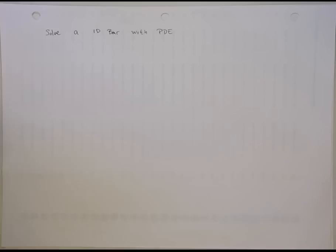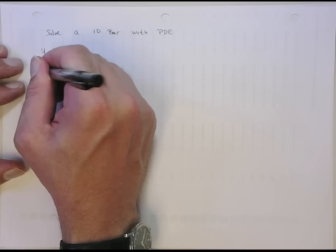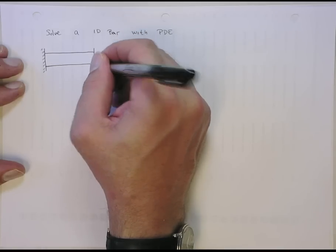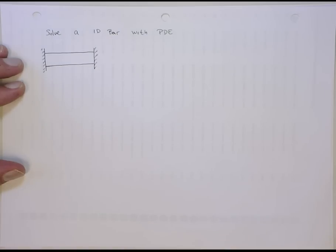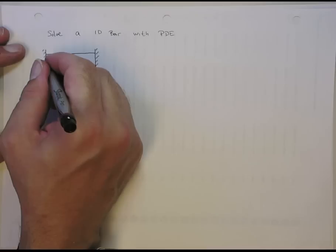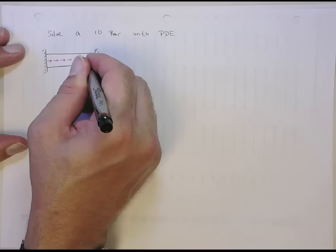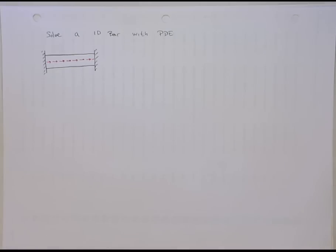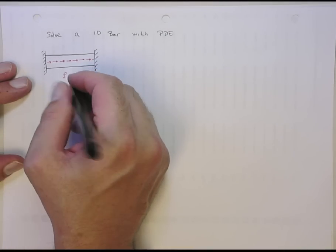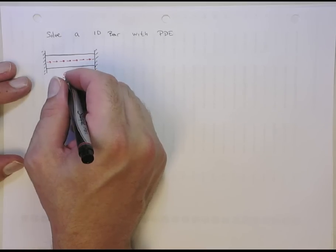The problem I want to consider is kind of an interesting one. I like it because, in some sense, the PDE solution is arguably easier than the mechanics and materials approach. So we have a bar that's clamped at both ends and then has a uniformly distributed load on it, an axial load. Maybe it's under its own weight. Let's imagine it's under its own weight.